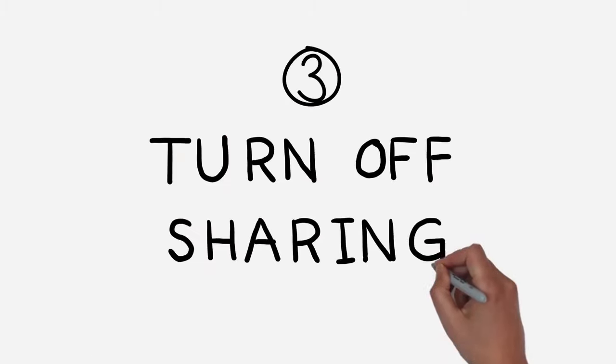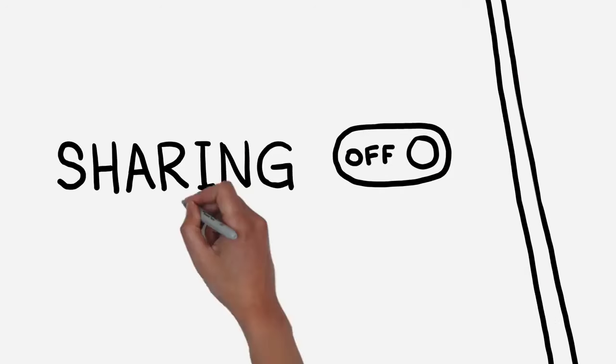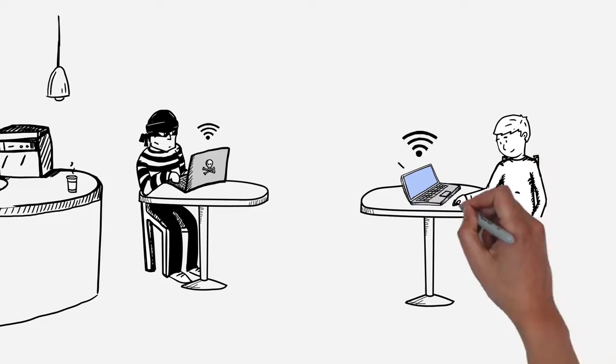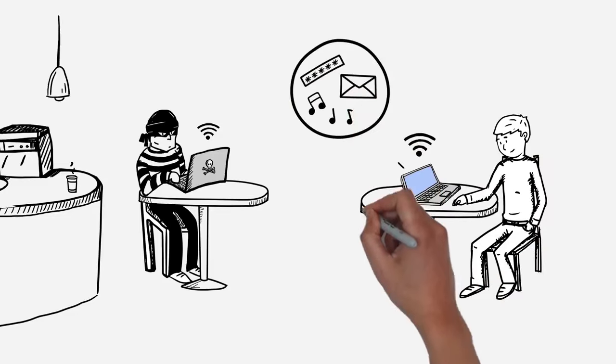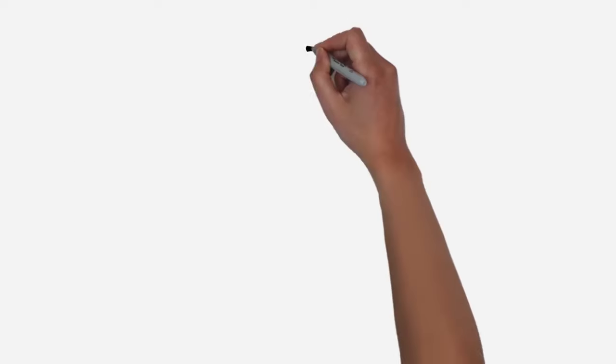3. Turn off sharing. Be sure to turn off sharing while you're on public Wi-Fi. If you leave it on while in a public place, cybercriminals can easily gain access to sensitive personal information and files.